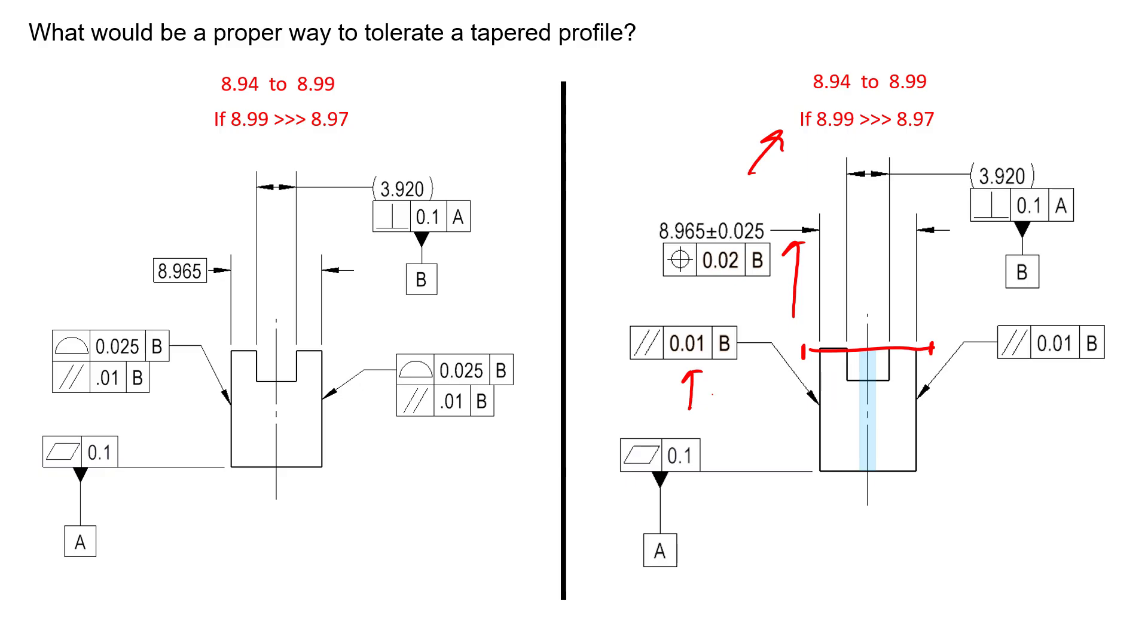We can't deviate all the way into 8.94 anymore on the bottom—we can only deviate in 10 microns. If we deviate in 10 microns both directions, that's a reduction in size of 20 microns. We could go from 8.99 at the top down to 8.97 at the bottom because of these additional callouts.